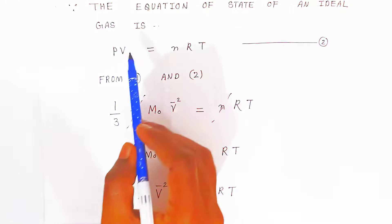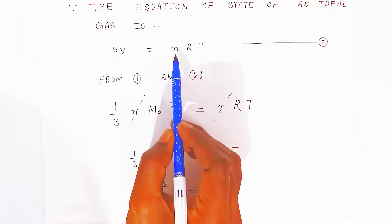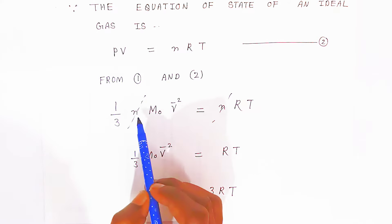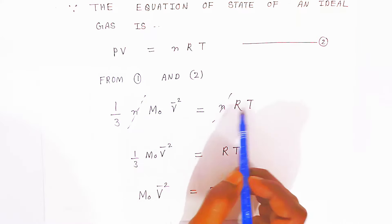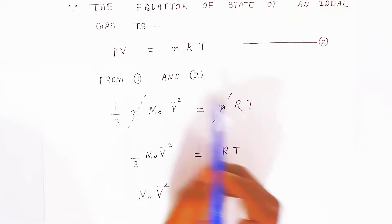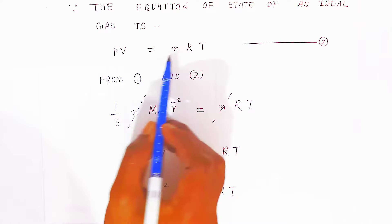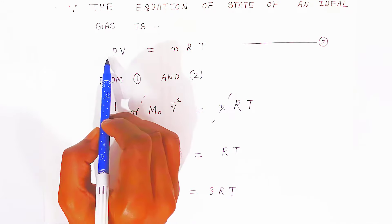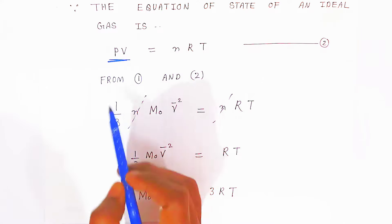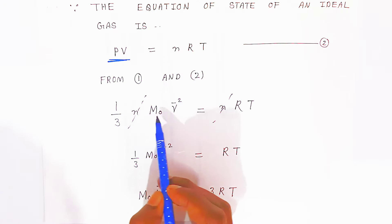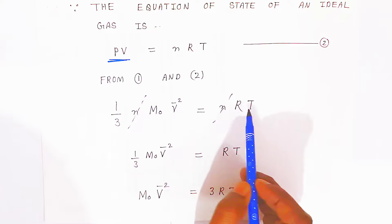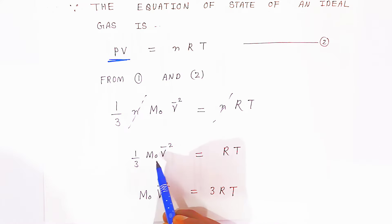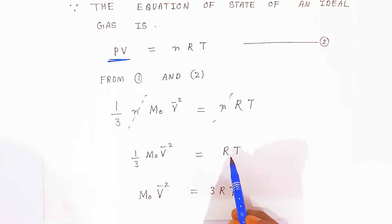The equation of state of an ideal gas gives PV = NRT. When you compare this with PV = (1/3) × N × M₀ × v̄², the N cancels on both sides, and you get: (1/3) × M₀ × v̄² = RT.